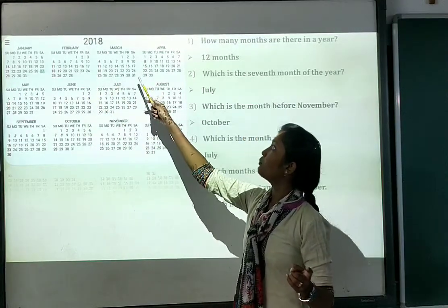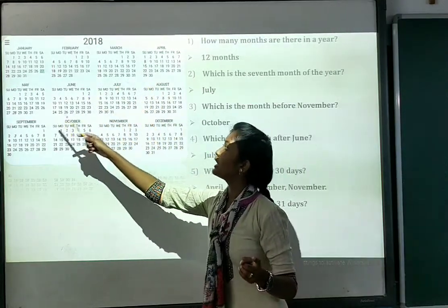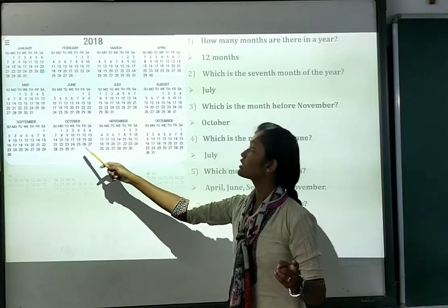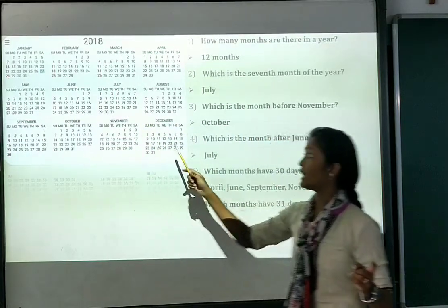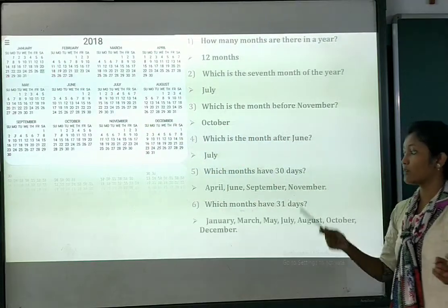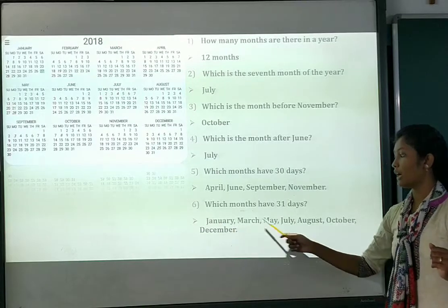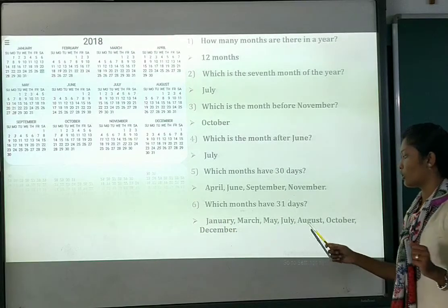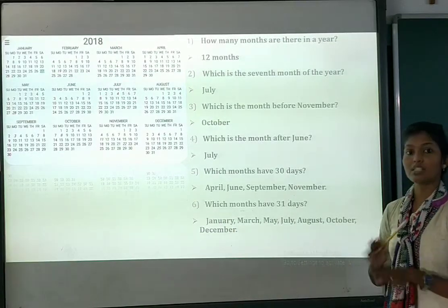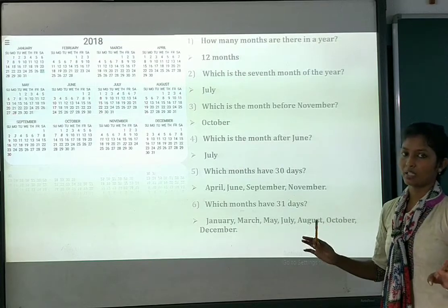The months with 31 days are: January, March, May, July, August, October and December. So you have to write the names of those months: January, March, May, July, August, October and December.